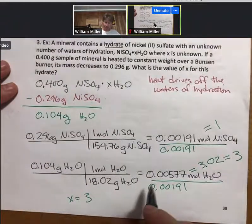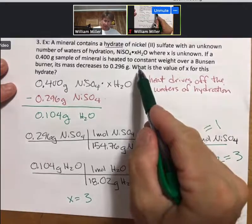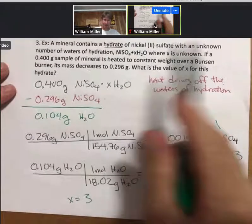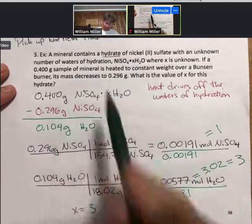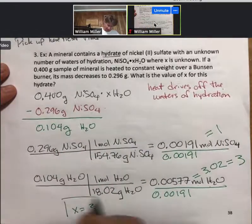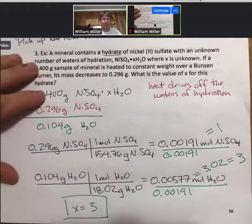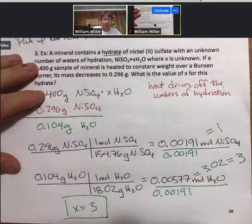And then, as always, and this is a good rule of thumb for anything you do in my class, go back to the question and make sure you've answered it. Sometimes there are a couple questions inside. This one just says, what is the value of X for this hydrate? We have the X equals 3. You don't have to box it, but sometimes it helps me stay organized to know that I've reached the final answer. Any questions about this problem?